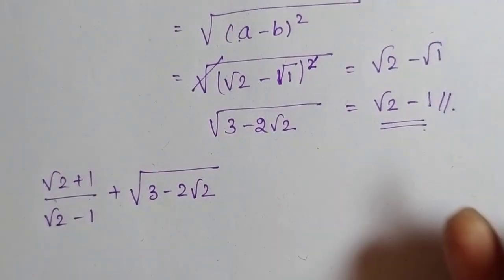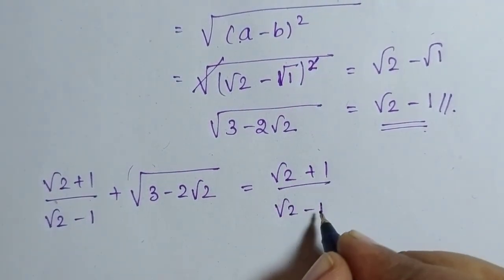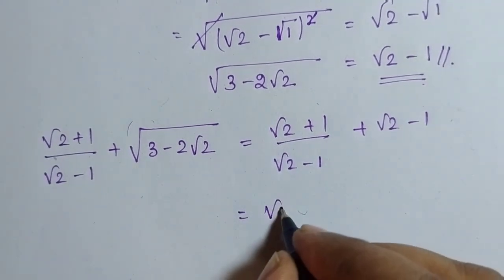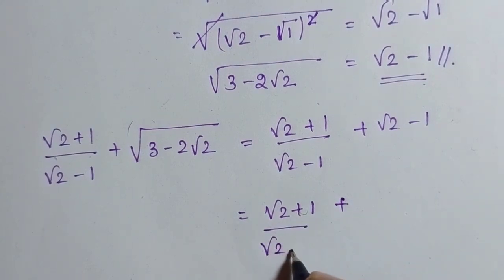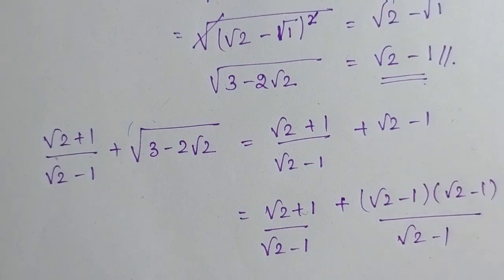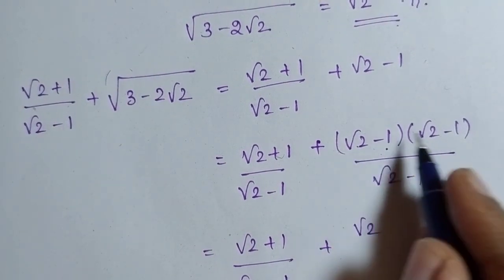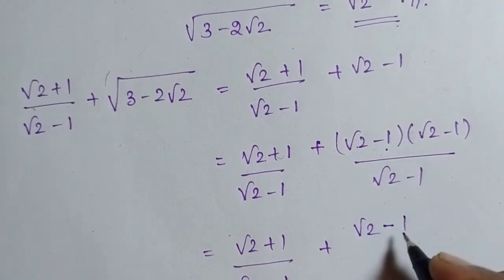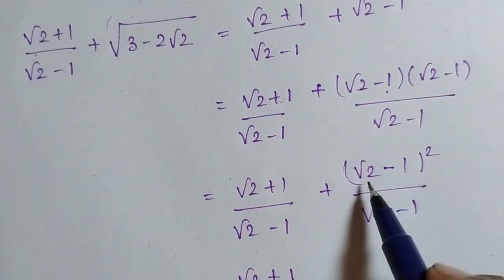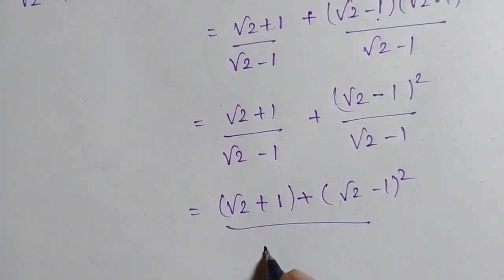I am going to substitute √2 − 1 in place of √(3 − 2√2). Therefore this becomes (√2 + 1)/(√2 − 1) + (√2 − 1). Taking LCM, I multiply (√2 − 1) × (√2 − 1) / (√2 − 1), which gives (√2 + 1)/(√2 − 1) plus (√2 − 1)² / (√2 − 1).